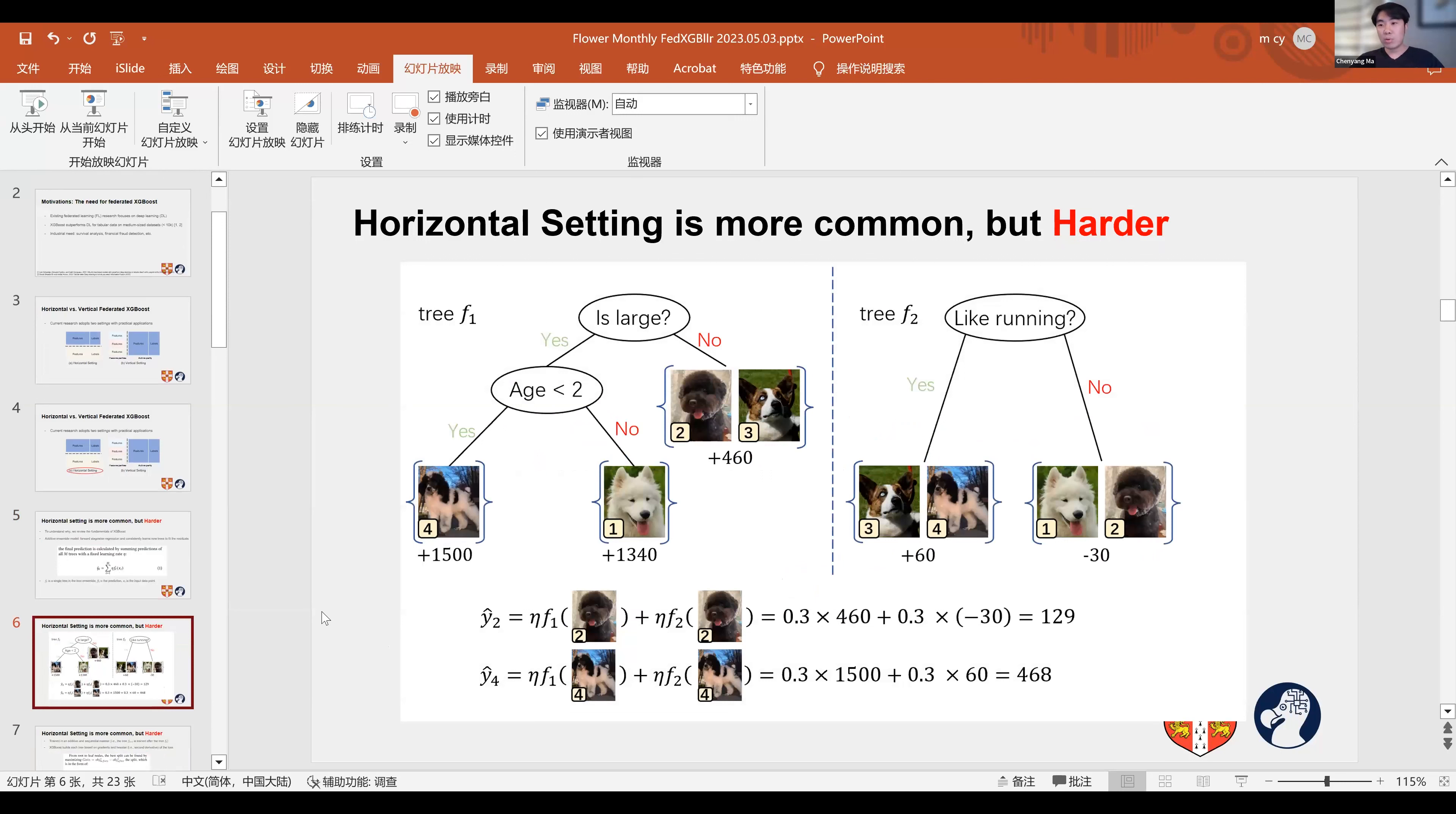This figure provides an example for better understanding. We have a regression task in which we want to predict the daily food consumption of a dog. We have two trees in our tree ensemble and we add the particular outcomes of all these trees to give the results.